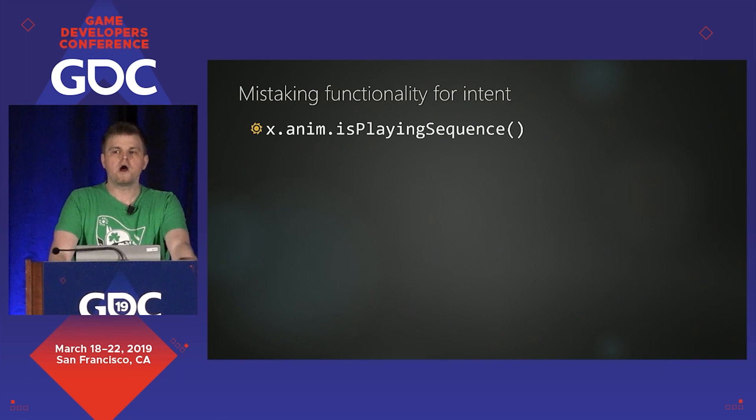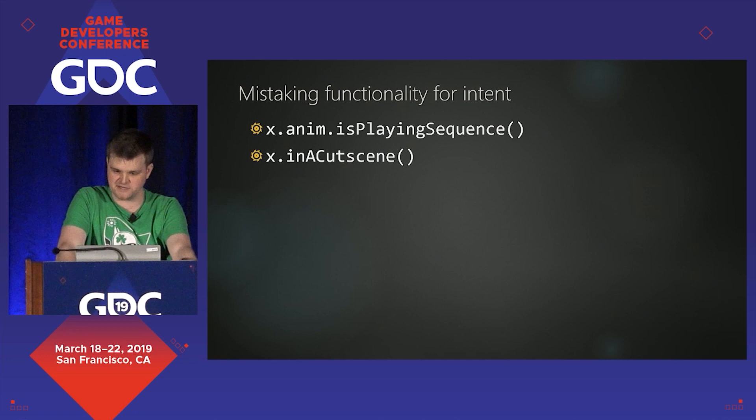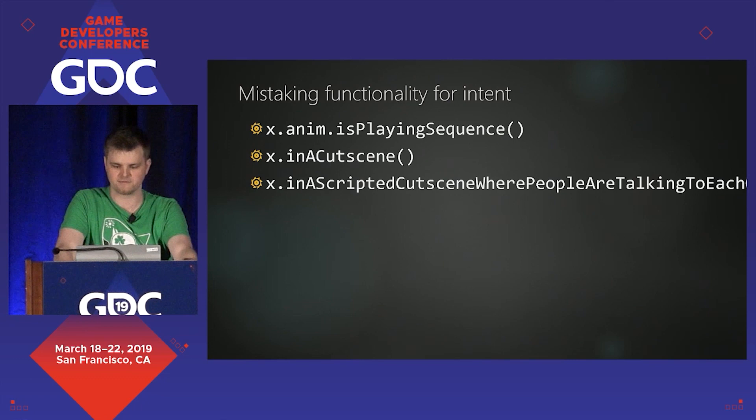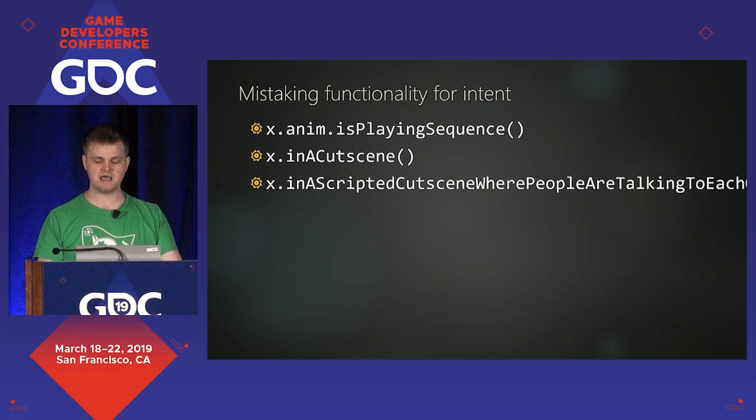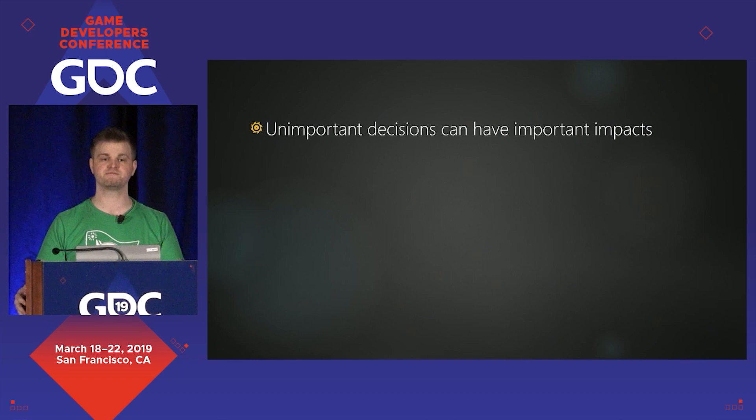What happened in this example? You mistook functionality for intent. The attribute you were looking at was called isPlayingSequence — it was not called 'in a cutscene.' It worked at that moment in time because nobody was using these canned animation sequences for anything else. But it wasn't testing what it wanted to test. It was testing a proxy of that. In the moment of implementation, this felt like a small, unimportant fix to a minor bug. Little decisions like this can have huge, far-reaching future impacts.